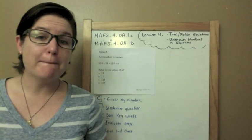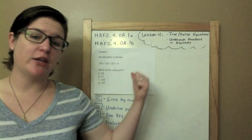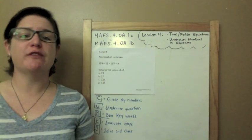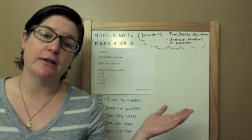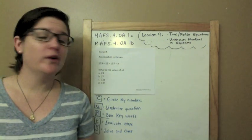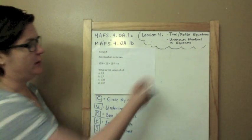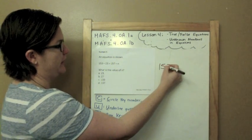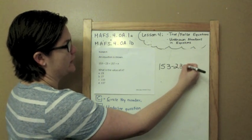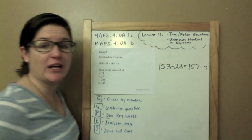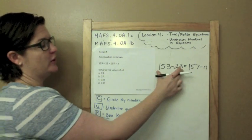Okay, multiple choice. An equation is shown: 153 minus 23 equals 157 minus n, which is our unknown. What is the value of n? So in order for this to be an equation, the two sides need to be equal.